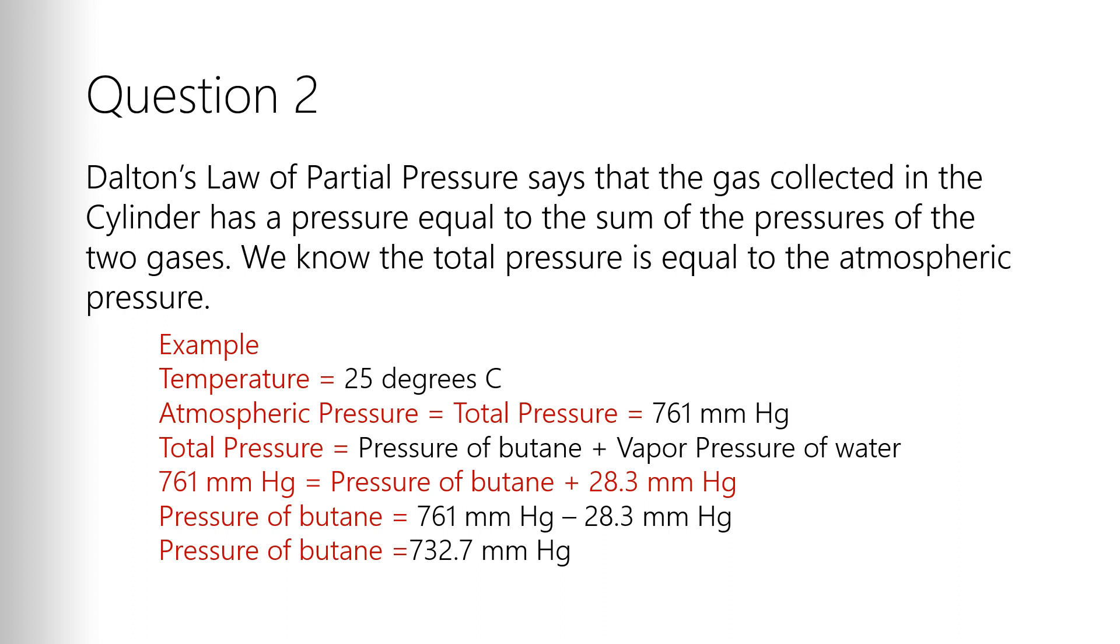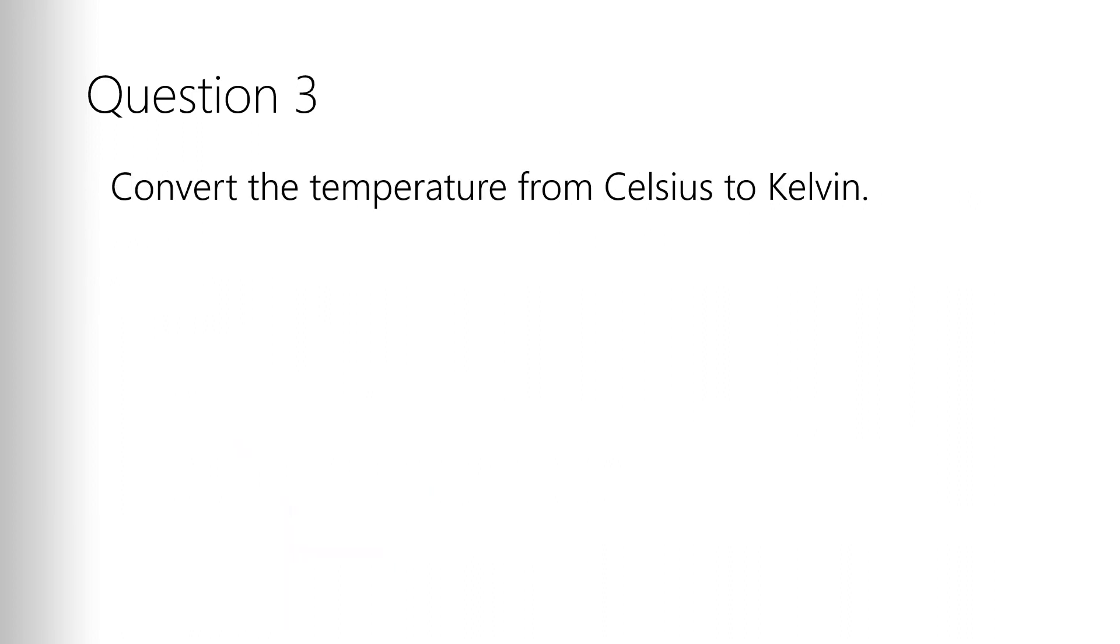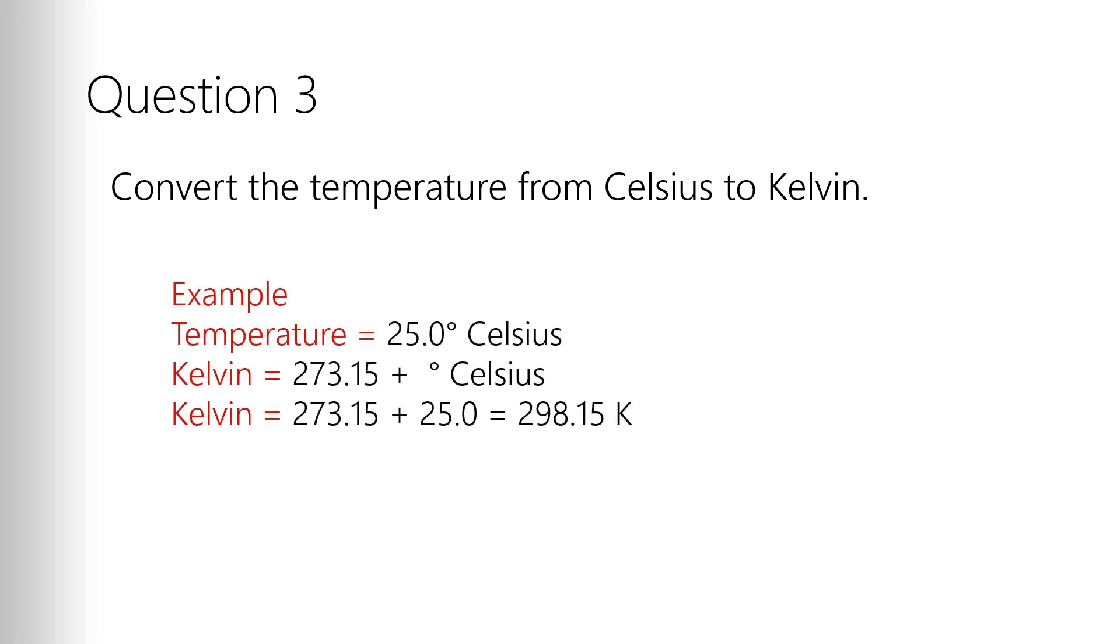So that's the pressure of our gas, the gas that we're worried about, the butane, 732.7 millimeters of mercury. Next thing we got to do is we got to convert the temperature data we have to Kelvin because remember you cannot do gas laws unless you are in absolute temperature scale Kelvin. So if we remember Kelvin is 273.15 plus whatever the temperature is in Celsius. So in our case, the example I'm using, the temperature is 25.0 degrees Celsius. So 273.15 plus 25.0 gives you 298.15 Kelvin.